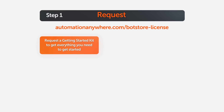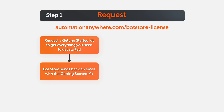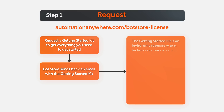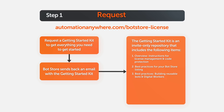Let's start with the first step — request your getting started kit. Go to the link mentioned on the screen to request it. You will soon receive an email from BotStore with the getting started kit: an invite-only repository that includes instructions for license management and code protection, best practices for your bot store listing, best practices for building reusable bots and digital workers, code examples, a copy of a licensed DLL which needs to be integrated into your metabots, and a sample bot package with the required folder structure.